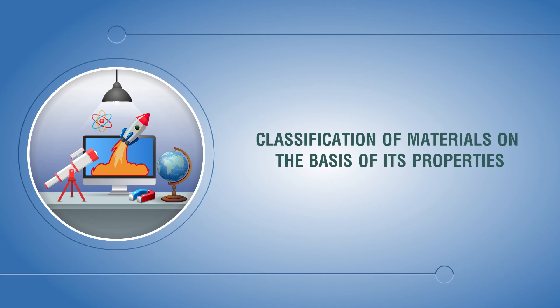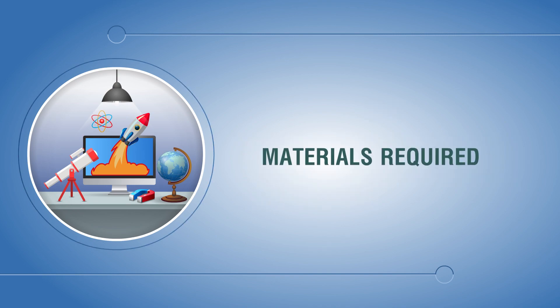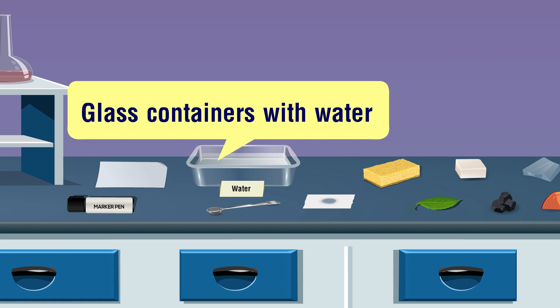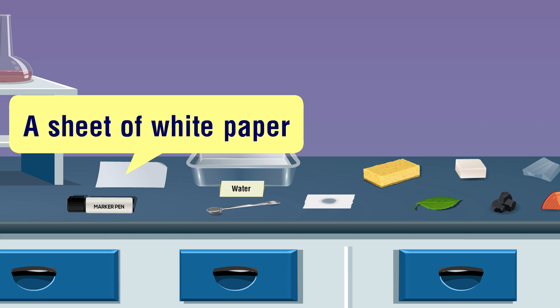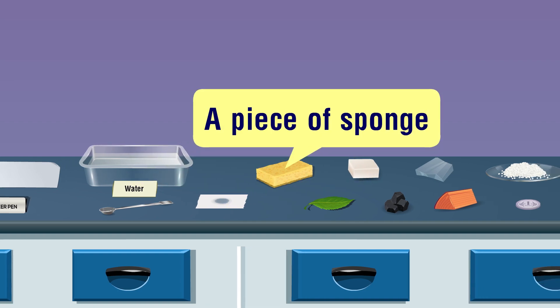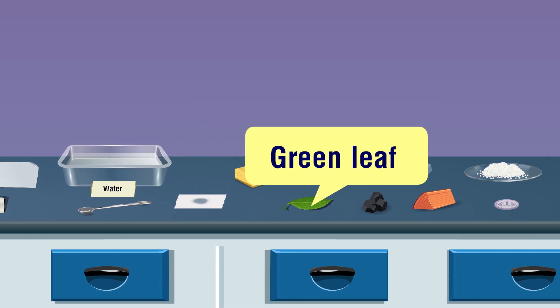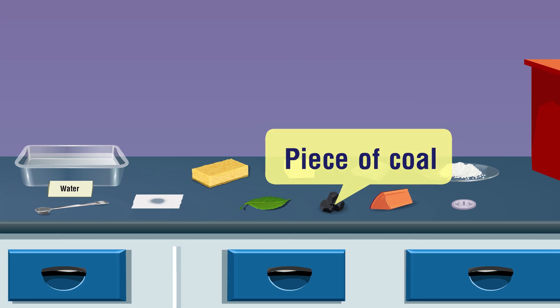Classification of materials on the basis of its properties. Aim: classify the given materials on the basis of properties such as hardness, solubility in water, floats in water, and transparency. Materials required: a glass container with water, a spoon, a sheet of white paper, a marker, oil-coated paper, a piece of sponge, a green leaf, a wax piece, coal, and a glass piece with blunt edges.